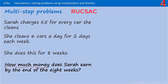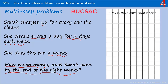We're being asked how much money Sarah earns in eight weeks. She charges five pounds for each car she cleans — six cars a day for two days each week — and she does that for eight weeks. I'm going to start with how many cars she cleans each week. She cleans six cars a day and does that for two days a week, so we're going to multiply six by two.